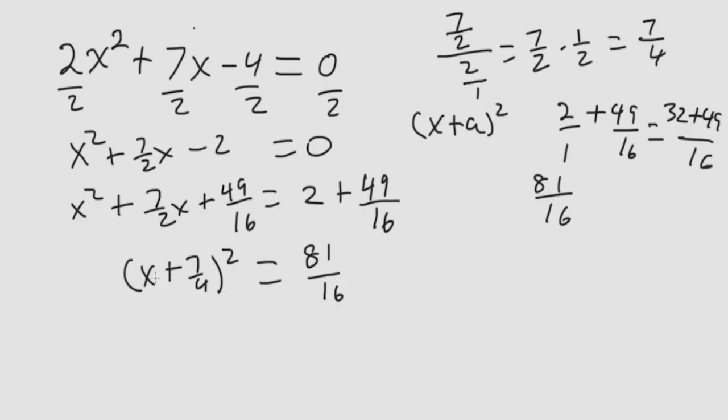So now, to isolate the x, first we take the square root of both sides. This is x plus 7 fourths is equal to plus or minus square root of 81 over 16.